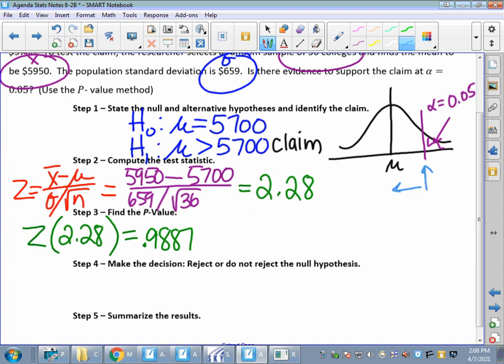If this is a 2.28 right here, then I look up and I get an area under the curve of 9887. Remember, that's everything to the left. So, how do I figure out what's to the right? I have to subtract that from 1. So, 1 minus 9887. That would be like a p value of 0.0113.